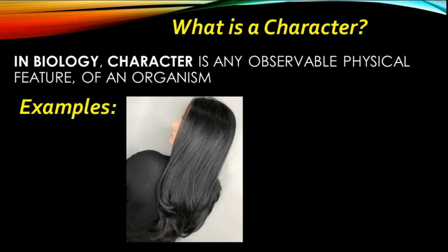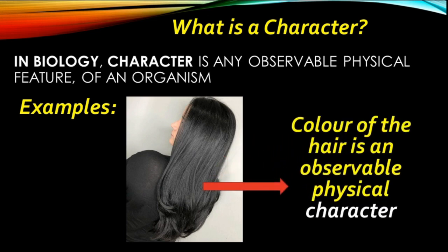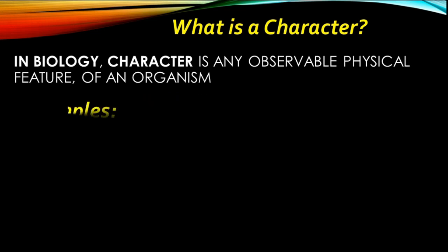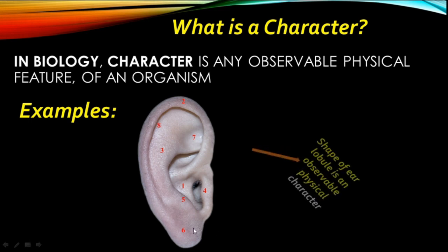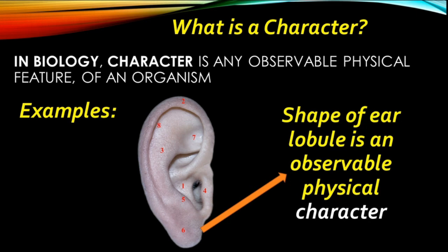Now look at the next example. In this picture you can see the hair of a lady and the color of the hair — black, as in the case of Indians and Africans. You are able to observe the color of the hair, so hair color is an observable physical character. One more example is the ear lobule — not the complete shape, but the last part of the ear pinna called the ear lobule is also an observable physical character. These are the set of characters we have seen.